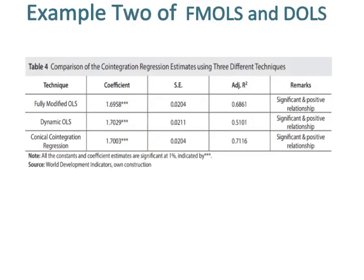Example 2 of FMLS, DOLS, and CCR: in this example, you can see the results of coefficient, standard error, and adjusted R-squared, which are statistically significant at 1% in all three approaches. An important tip is that you can change FMLS in the Stata command to CCR in order to get results of coefficients, standard error, and adjusted R-squared in canonical cointegration regression.